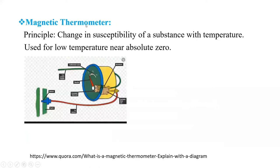Next is magnetic thermometer. Change in susceptibility of substance with temperature is its principle. It is used for low temperature near absolute zero. It is shown in this figure.